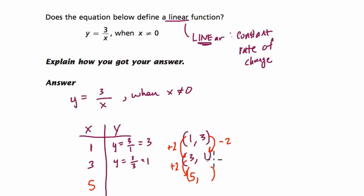So y is equal to 3 divided by 5. But what does that equal? That's 3 fifths, which is 0.6. So now we go from 1 to 0.6. That means we're decreasing by 0.4. So this rate of change is different. It's not linear.